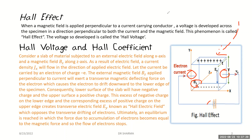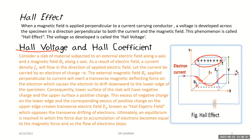The electrons will experience the Lorentz force directed downward as suggested by Fleming's left-hand rule, so electrons are deflected down. The lower edge of this specimen will have negative charge density, while the corresponding positive charge density will be on the upper edge. There is thus a potential difference created between the lower edge and the upper edge of the specimen.